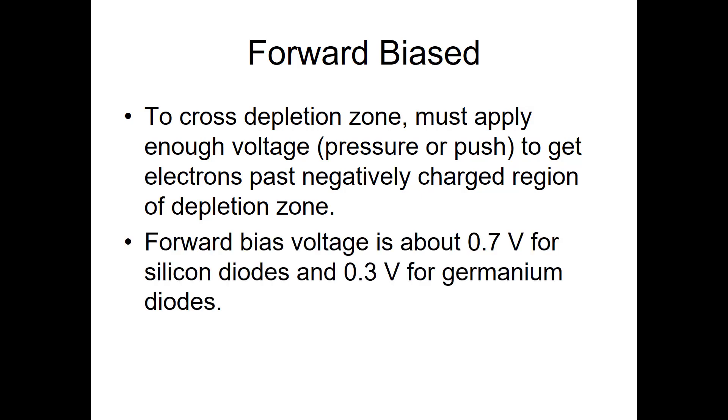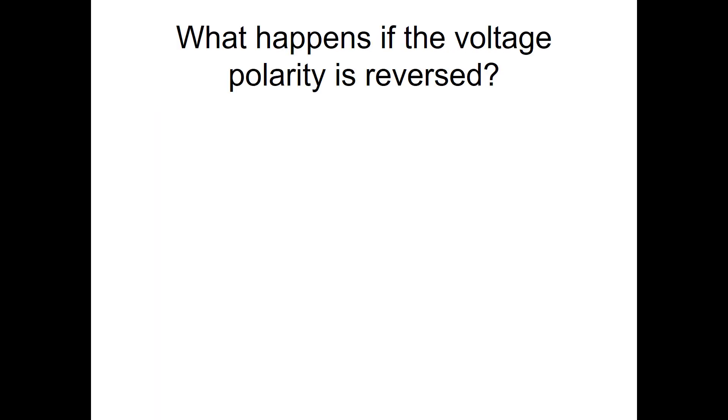We call that forward biasing the diode. The forward bias voltage for a silicon diode is about 600 or 700 millivolts, 0.6 or 0.7 volts. And for germanium diodes, it's around 300 millivolts.